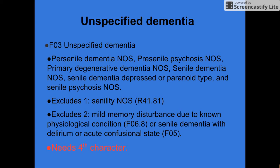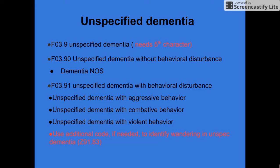Unspecified dementia is coded as F03. It excludes senility and mild memory disturbance due to a known physiological condition. It needs a fourth and fifth character. If wandering is present in this patient, you should use the code Z91.83.